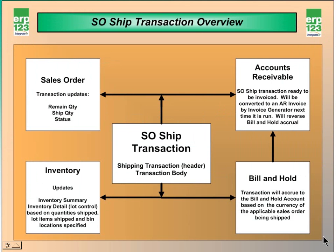Let's take a quick look at the sales order shipping transaction overview chart. The sales order shipping transaction contains two parts: the shipping transaction itself — which includes the sales order number, the carrier, the bill of lading number, and all that parent information — and the transaction body, where all of the items and quantities are stored.